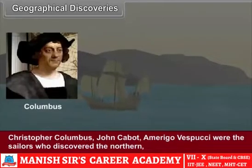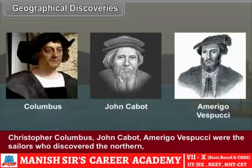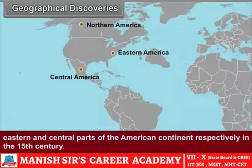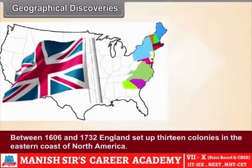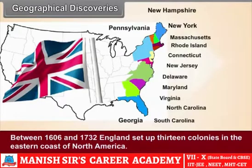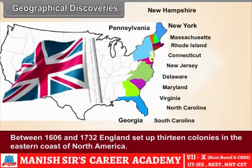Christopher Columbus, John Cabot, and Amerigo Vespucci were the sailors who discovered the northern, eastern and central parts of the American continent respectively in the 15th century. Between 1606 and 1732, England set up 13 colonies in the eastern coast of North America. Vasco de Gama found out the sea route to India. Ferdinand Magellan, the Portuguese sailor who circumnavigated the earth first, was killed during his voyage. Nevertheless, his companions completed the dream project of Magellan.